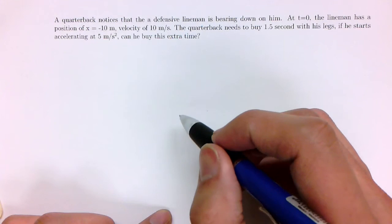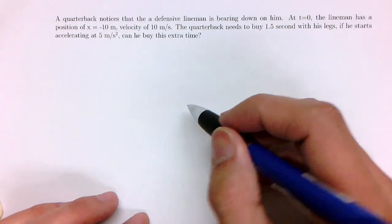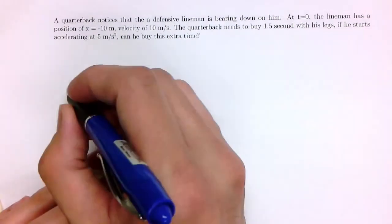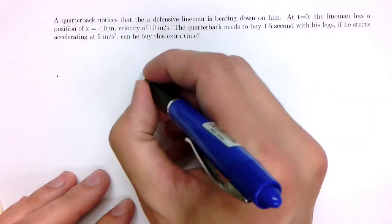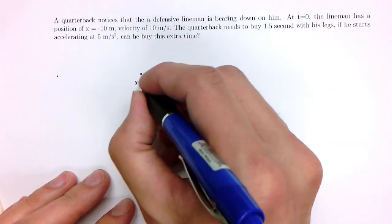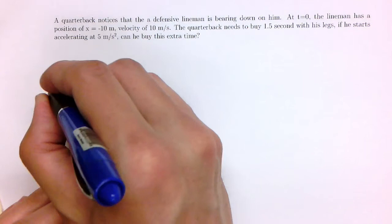Let's draw a picture of what we know. This is the position of the QB. This is x equals 0. This is the lineman right now, which is minus 10.